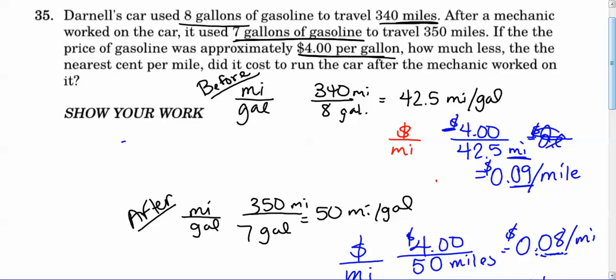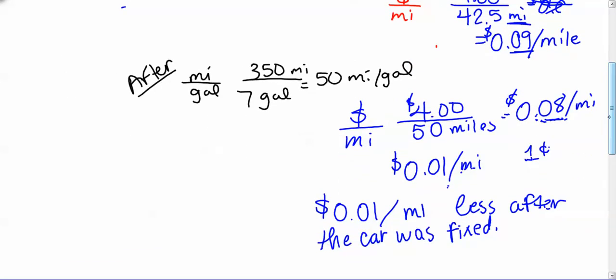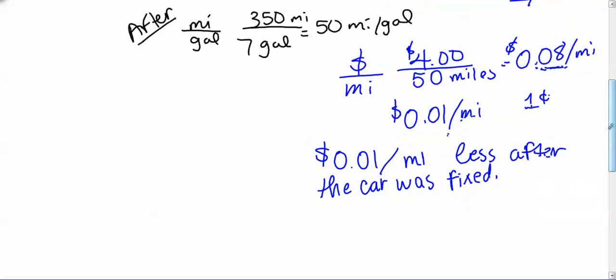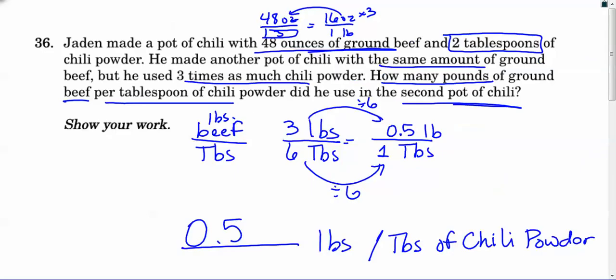So step one, find out his gas mileage. Step two, obviously do that for both. Step two is to find out how much it's going to cost him per mile. Step three is really what will get us to our answer, which is what is the difference? How much less it's costing him for every mile. So if you take 9 cents and subtract 8 cents, that means it's one cent different after the car is fixed. All right. So there you have it kids. Let's see what's next.